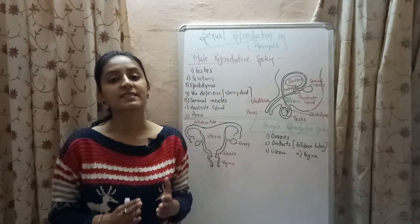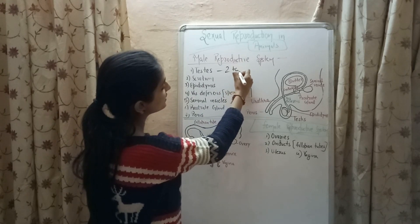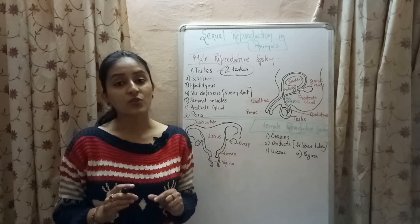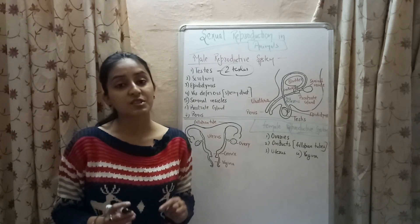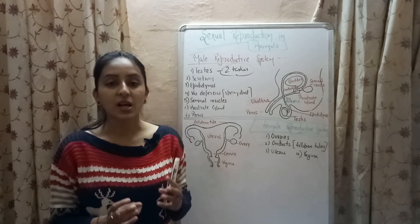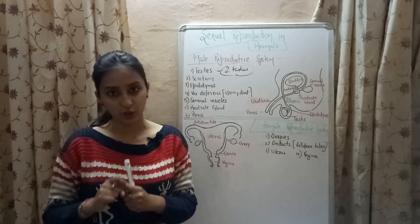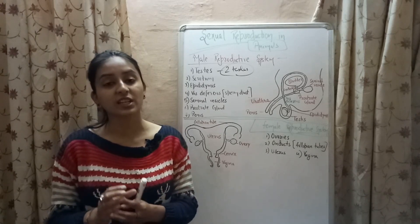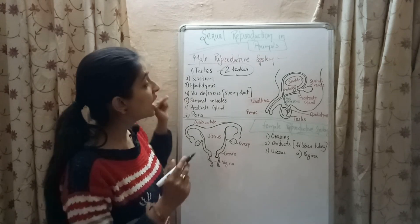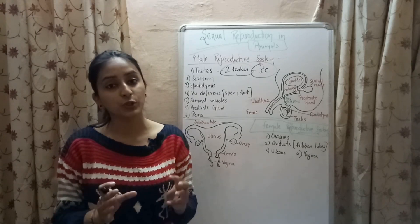Testes are also known as the primary reproductive organs of males. There is a pair of testes present in human males. They are responsible for the production of the male sex hormone testosterone and the male sex cells known as sperms. The testes are present in a muscular pouch known as the scrotum, which lies outside the abdominal cavity, because the formation of sperms requires three degrees Celsius less temperature than the normal body temperature.